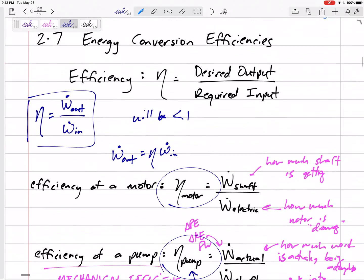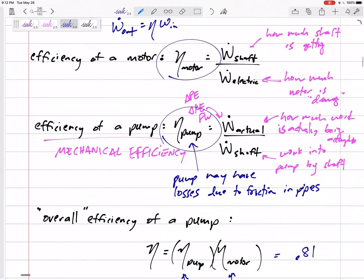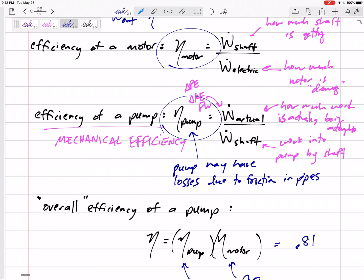The main thing, it's output over input. And if you have two things in series connected to each other, then you multiply the efficiency of the motor times the efficiency of the pump.